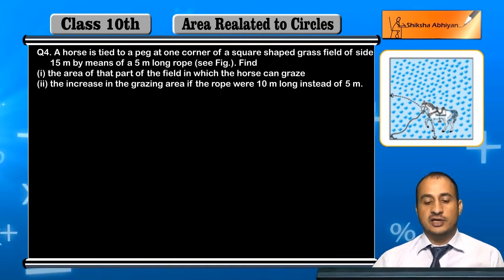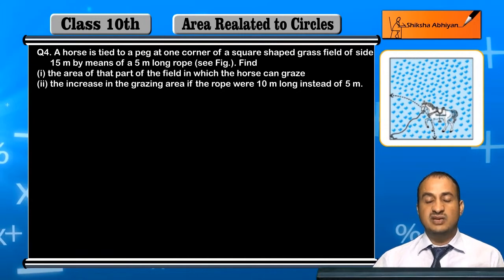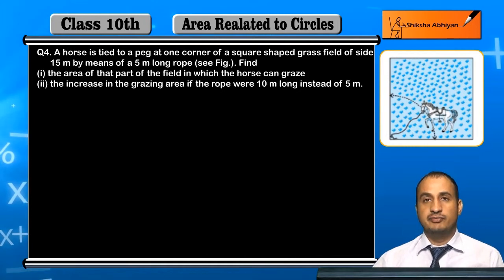See the figure. You can see a horse in a 15 meter square field, in one corner with a peg, which has a 5 meter rope.